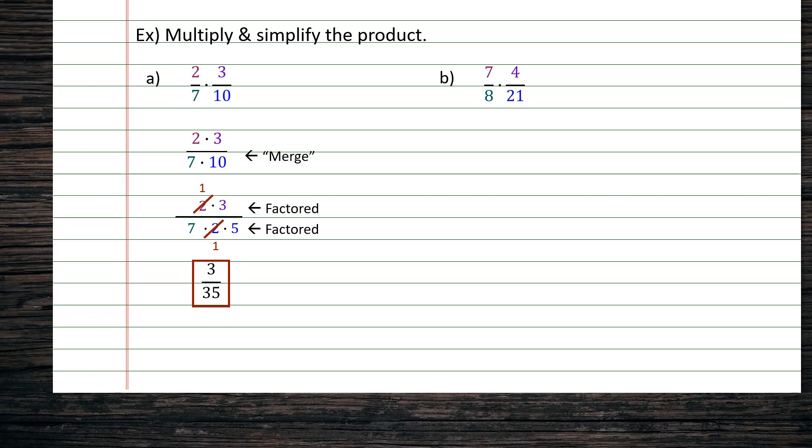Example B, we have 7 over 8 times 4 over 21. Like the previous problem, we are going to merge the two fractions. We merge by multiplying top times top, bottom times bottom, giving us 7 times 4 in the numerator and 8 times 21 in the denominator.